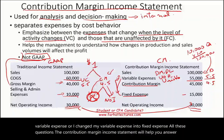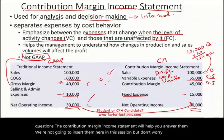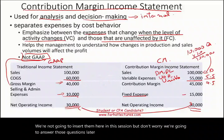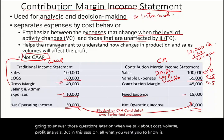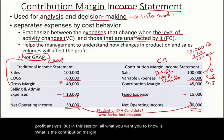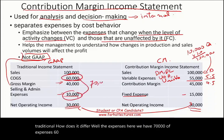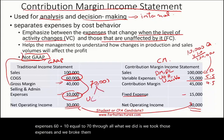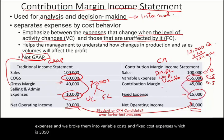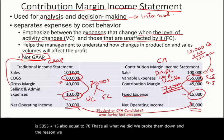We won't answer all those questions in this session, but we will address them later when we talk about cost-volume-profit analysis. For now, all you need to know is what the contribution margin income statement is and how it differs from the traditional income statement. Under the traditional statement, total expenses are $70,000 ($60,000 plus $10,000). All we did in the contribution margin format is break those same $70,000 of expenses into variable costs of $55,000 and fixed costs of $15,000 — the same total, just reorganized for decision-making purposes.